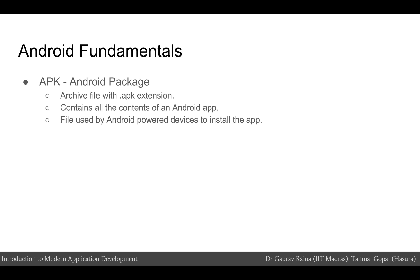Let's talk Android fundamentals. The Android SDK tools compile your code along with any data and resource files into an APK, which is an Android package. An APK is an archive file with a .apk suffix. One APK file contains all the contents of an Android app and it is the file that Android-powered devices use to install the app.